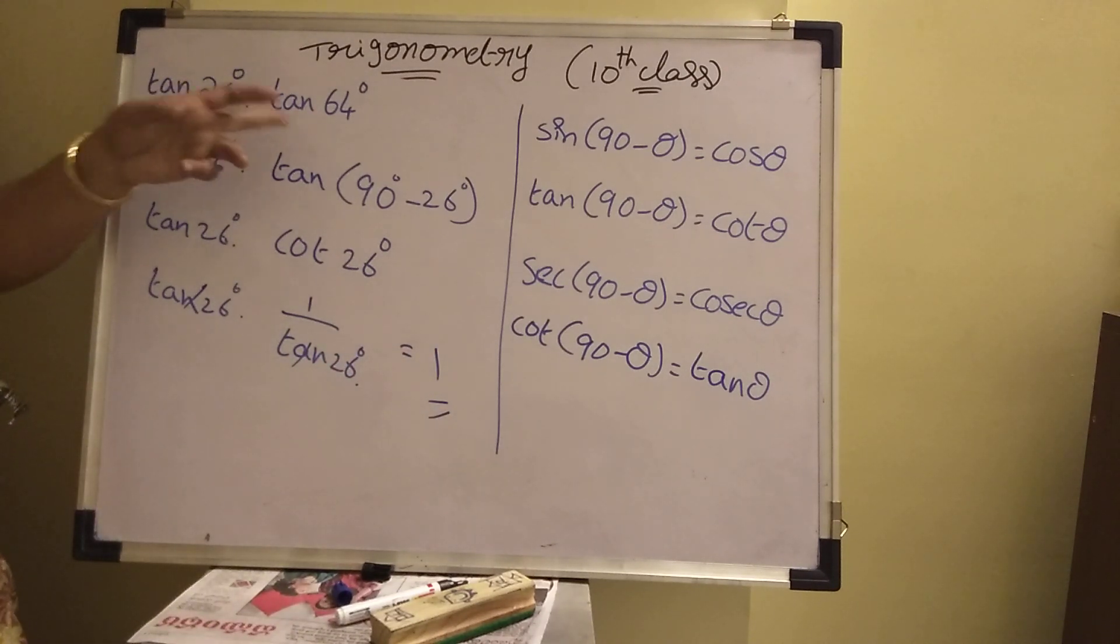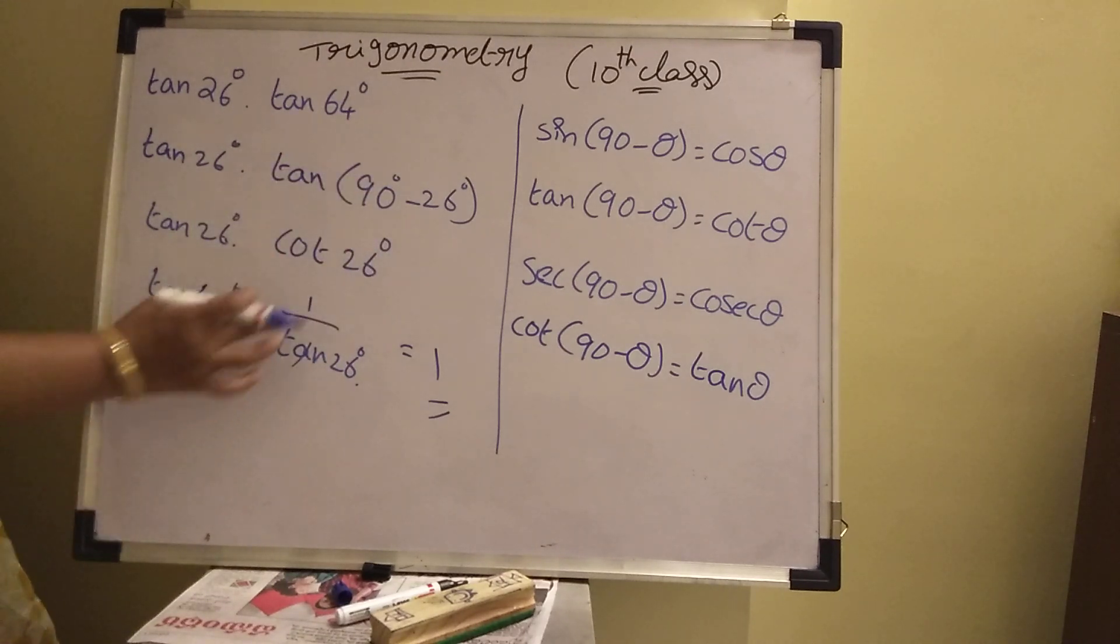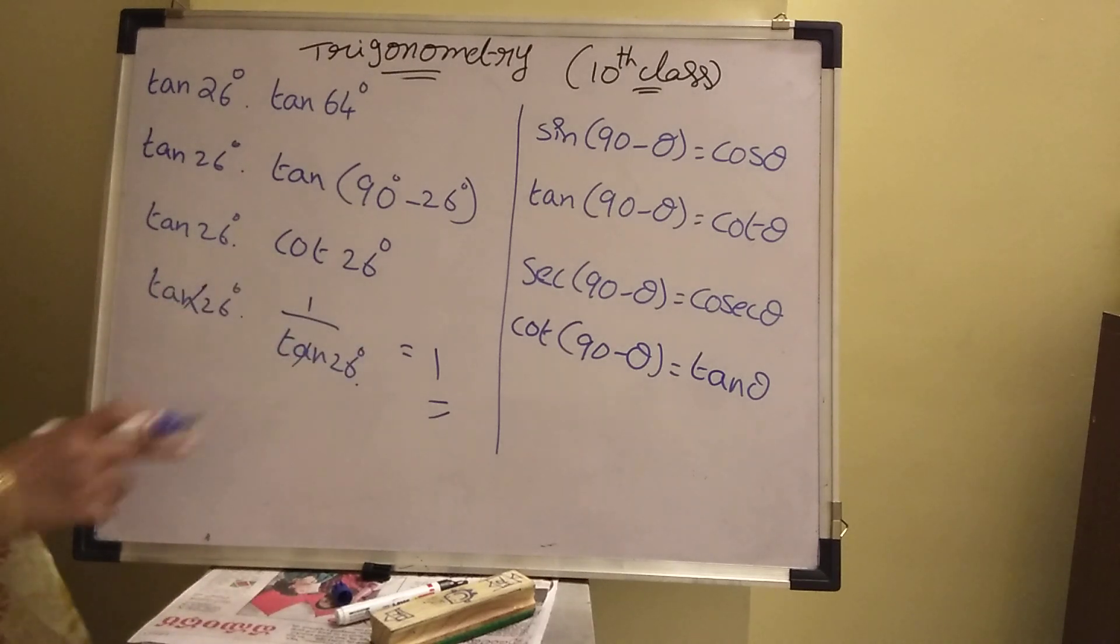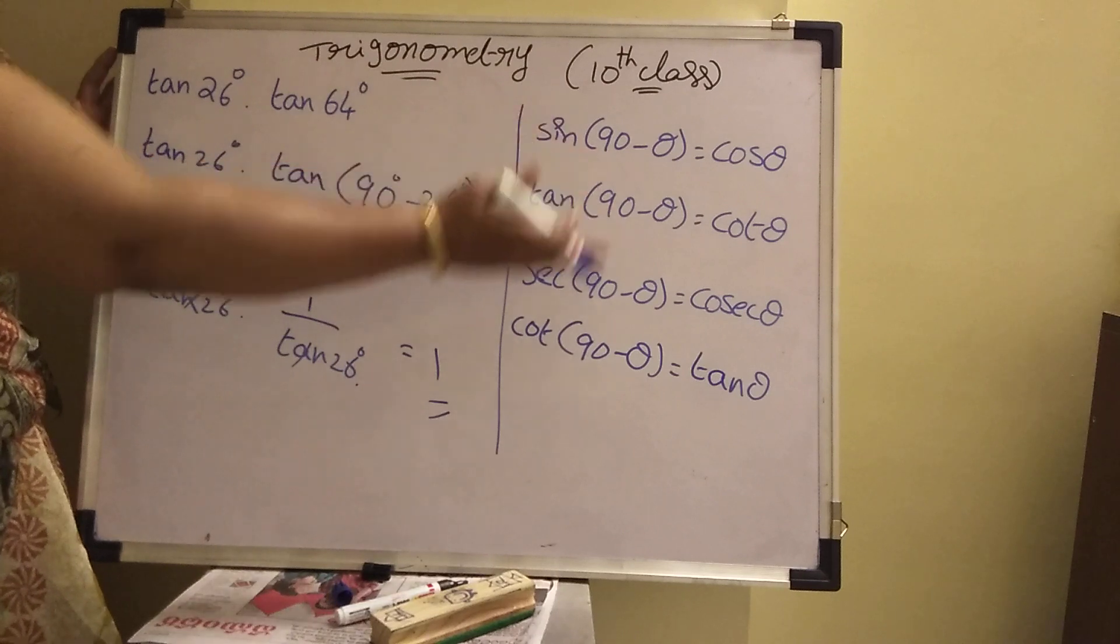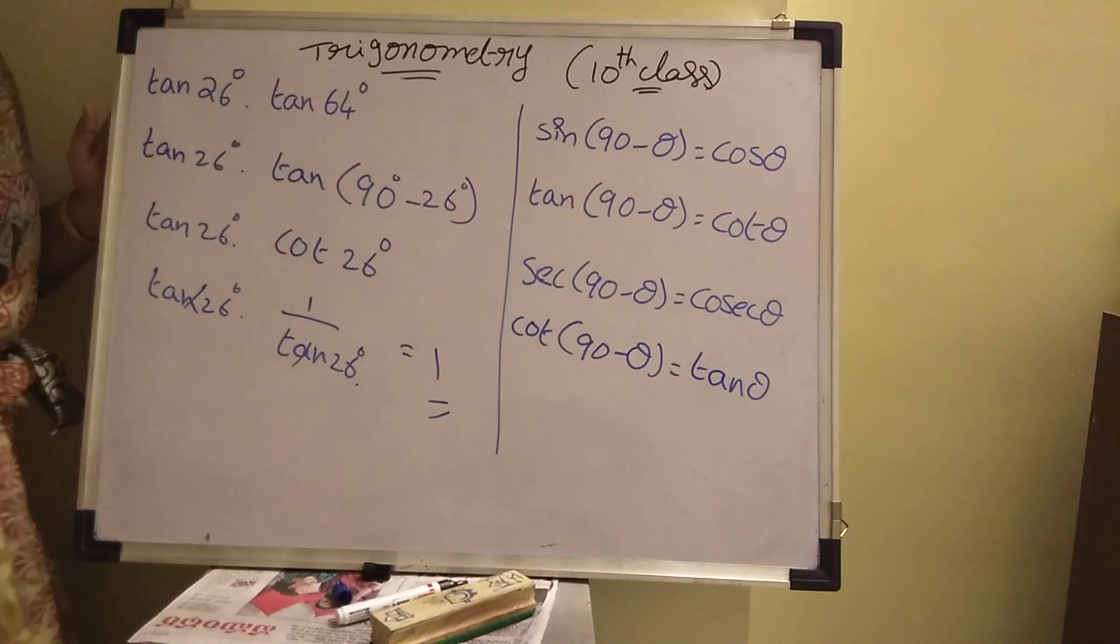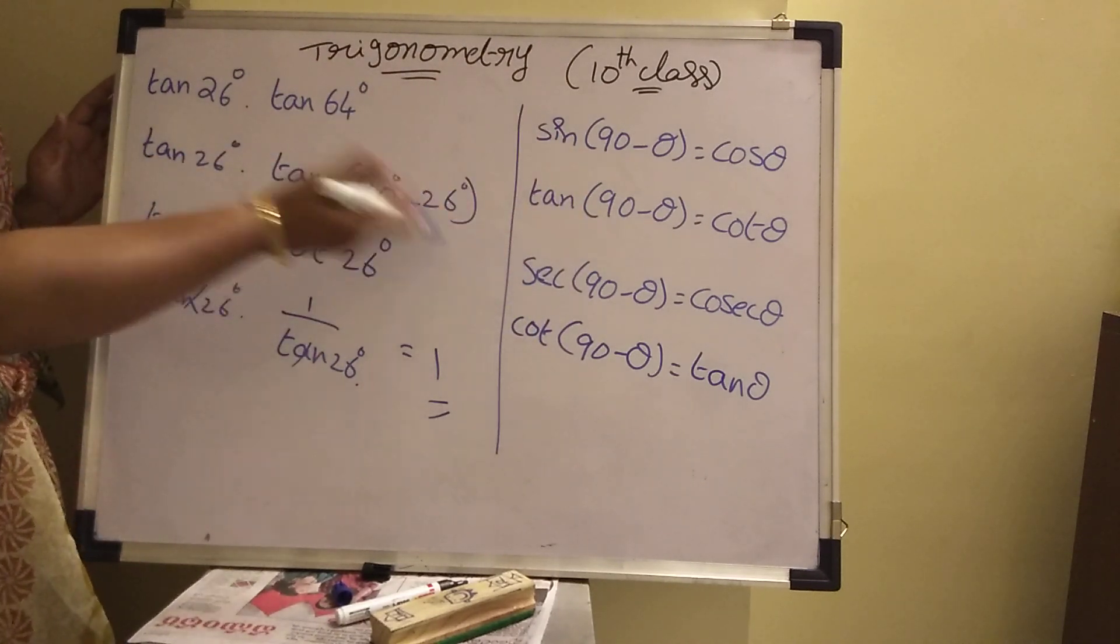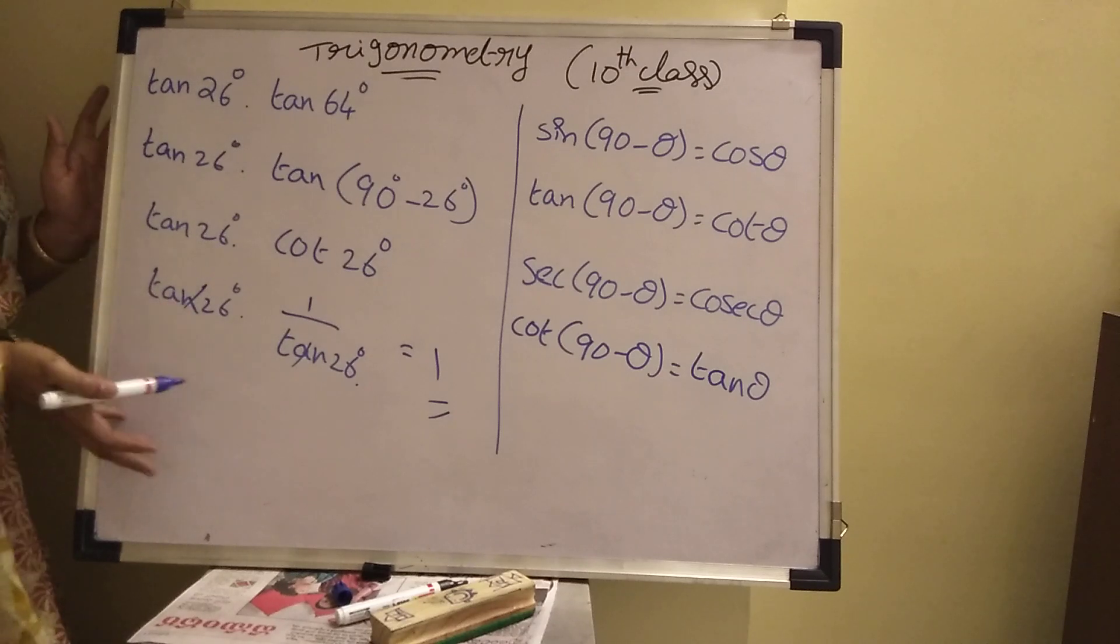See, tan 26, tan 64. This degree is tan of 90 minus theta before angle. Tan of 90 minus theta, cot theta. Cot theta means 1 by tan theta. That's why cancel one time answer. These are very important problems. These are basic and complementary angle only. How to change the functions? Then it will be answers 1 and 0 only. It's very important in 10th class.